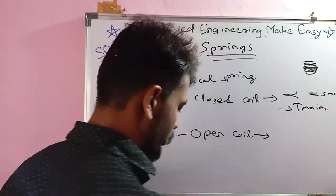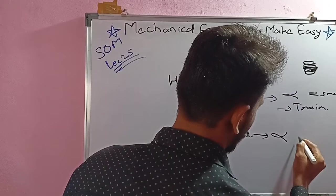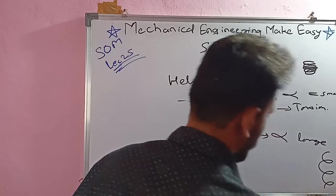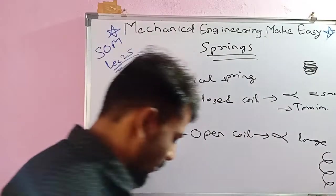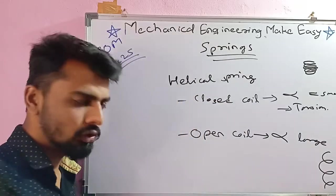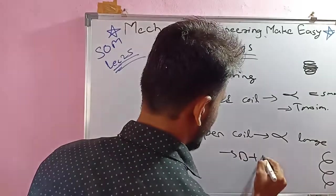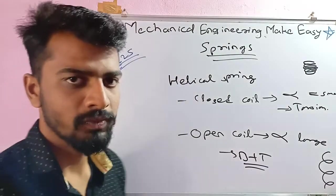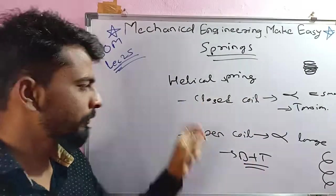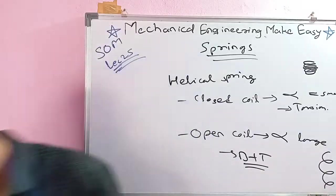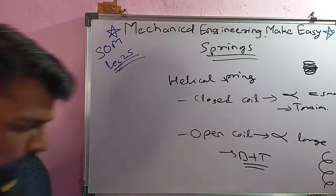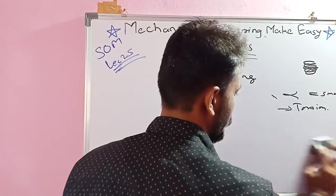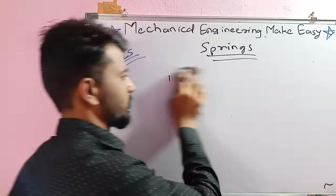In the case of an open coil spring, the helix angle alpha is large, so the spring is more spread out. It is subjected to both bending plus torsion. That is all the description of helical spring types — closed coil and open coil. The formula part is coming next.